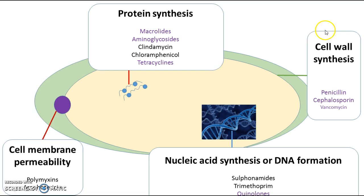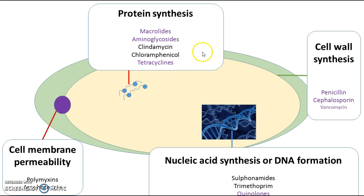To summarize: cell wall synthesis inhibitors include penicillins, cephalosporins, and vancomycin. Protein synthesis inhibitors include macrolides, aminoglycosides, clindamycin, chloramphenicol, and tetracyclines. Cell membrane permeability agents include polymyxin and amphotericin B. Nucleic acid synthesis inhibitors include sulfonamides, trimethoprim, and quinolones.